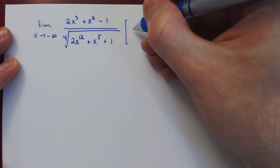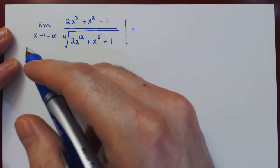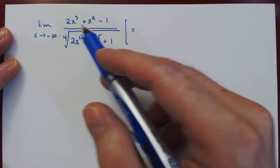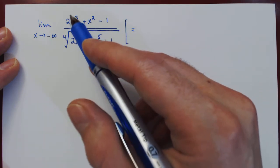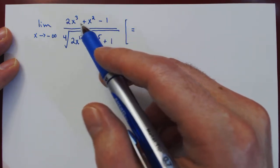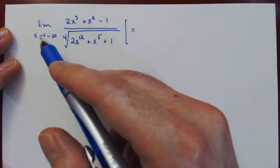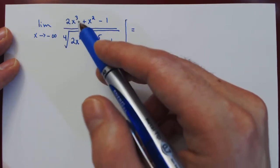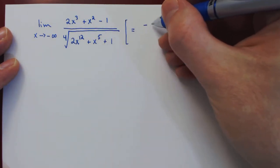So as always, we first check the case. As x goes to negative infinity, on the numerator, the largest power of x is x cubed, so it dominates the other terms. And so as x goes to negative infinity, 2x³ goes to negative infinity.